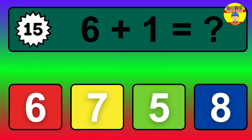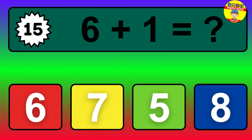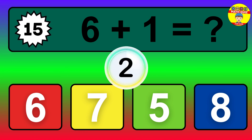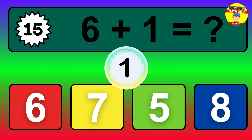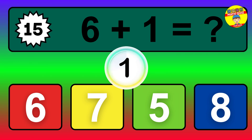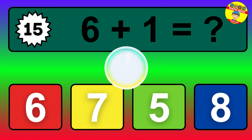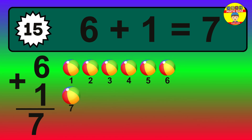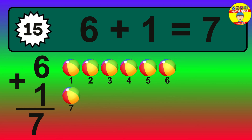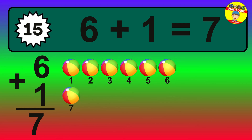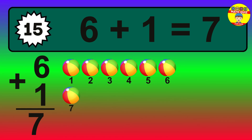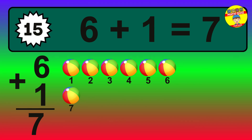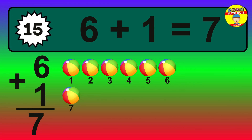Question 15. 6 plus 1 equals what? The answer is 6 plus 1 is 7. Let's count it: 1, 2, 3, 4, 5, 6, 7.